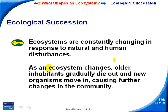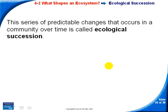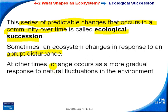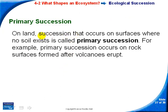Ecological succession is the series of predictable changes that occur in a community over time. As an ecosystem changes, different inhabitants come in and cause changes to that community. This can be in response to natural or human disturbances, or it can be a more gradual response to environmental changes. There are two main types.